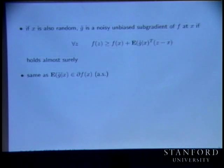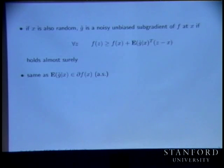If this inequality holds almost surely, then you call it a noisy unbiased subgradient.